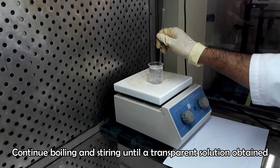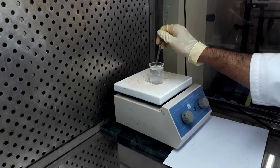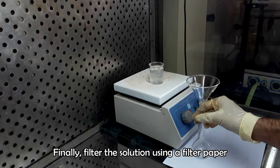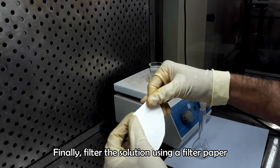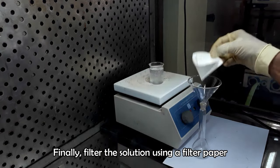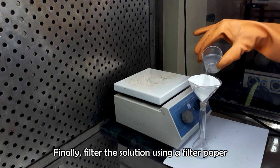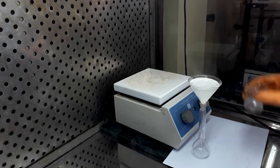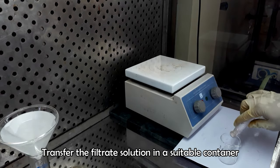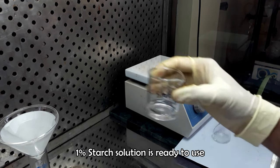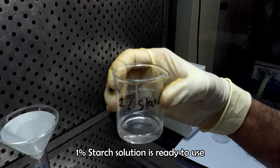Clean and transparent solution indicates that the starch is dissolved in water completely. After dissolving the starch, filter the solution immediately using a filter paper. Collect the filtrate and use it in the test as 1% starch indicator.